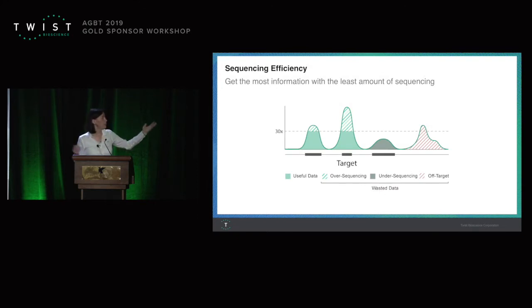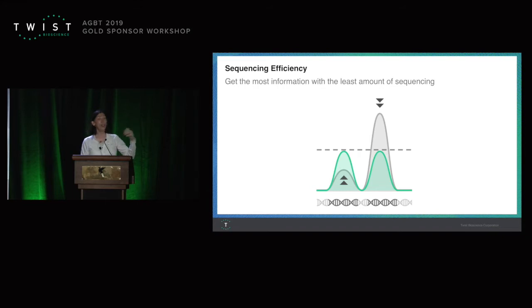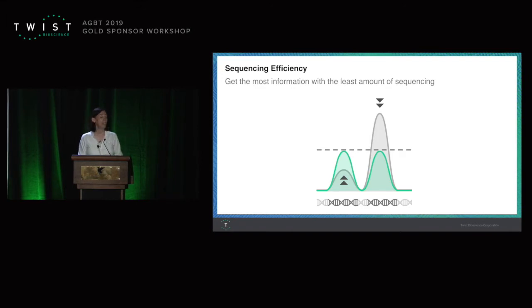First, sequencing efficiency — this is what we are trying to do. You can see that there is a target region where you want to capture, and the goal is to get to 30x coverage with as little sequencing as possible, meaning that we don't want to over-sequence any target because that's just a waste of your sequencing dollar. At the same time, we don't want to under-sequence anything, and we definitely don't want any off-target. What we have achieved is balancing the coverage such that you don't have under-sequenced regions or over-sequenced regions, which is important for 30x coverage. And if you think of going to 400x coverage for cancer samples, or thousands of x coverage for circulating DNA, it's even more important.